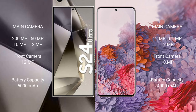Samsung Galaxy S24 Ultra features a rear quad camera setup: 200MP + 50MP + 8MP + 12MP, and a front camera of 12MP. Samsung Galaxy S20 features a rear quad camera setup: 12MP + 64MP + 12MP, and a front camera of 10MP.